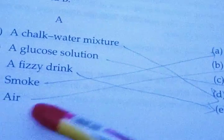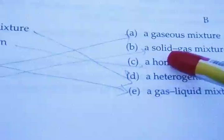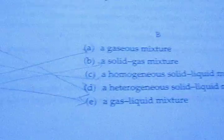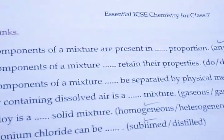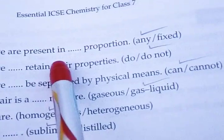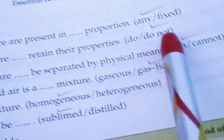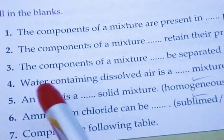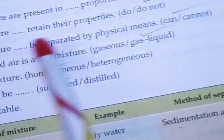Because, in case of air, there are some dust particles. That's why, it is a solid gas mixture. Next, fill in the blanks. The components of a mixture are present in any proportion. The components of a mixture do not retain their properties. The component of a mixture can be separated by physical means.